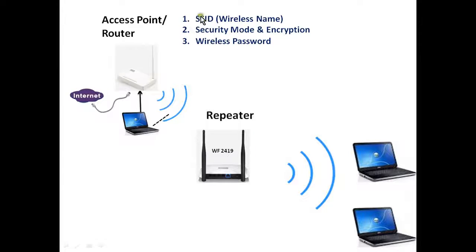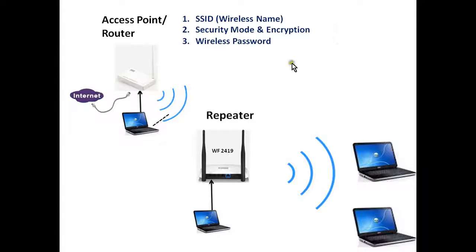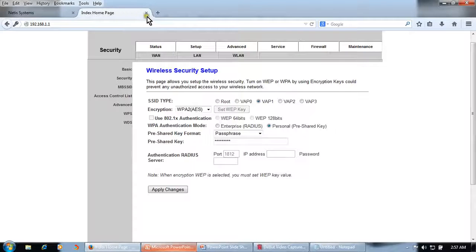Now we have all three parameters. We will connect the laptop to the WF2419 LAN port. We will connect the power to the power port and an Ethernet cable to the LAN port, then open the configuration page.